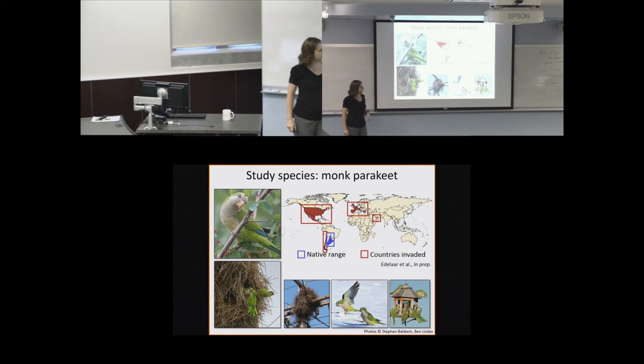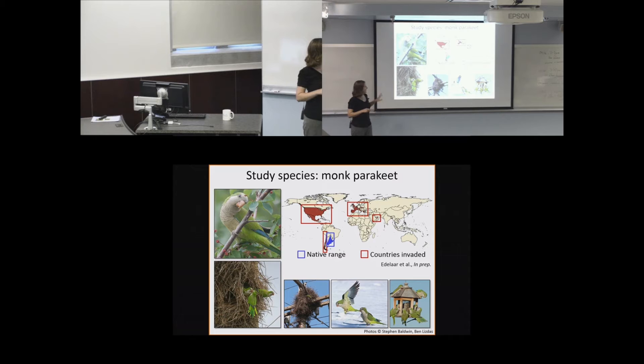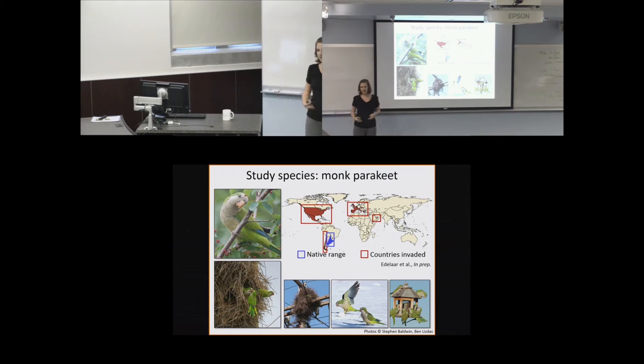For my dissertation research I focused on one particular parrot species, the monk parakeet, which is a small parakeet native to temperate South America—shown here in blue on the range map. This species is really interesting because it has the potential for complex sociality. The birds nest in colonial aggregations and often build communal nest structures that can house up to about 30 pairs in the wild. So they're a highly social species.